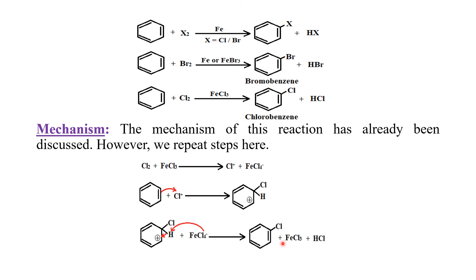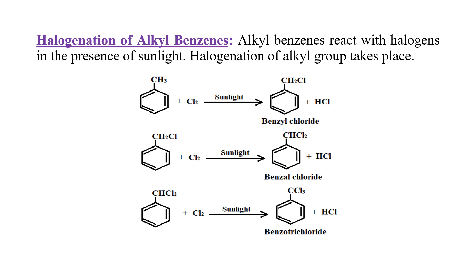Alkyl benzene की halogenation के लिए sunlight चाहिए - यहाँ पर halogen atoms side chain के hydrogens को replace करेंगे। पहले step में एक hydrogen replace होने से benzyl chloride बनेगा, दूसरे step में दूसरी hydrogen replace होने से benzal chloride बन जाएगा, और third step में तीसरी hydrogen replace होने से benzotrichloride बन जाएगा।